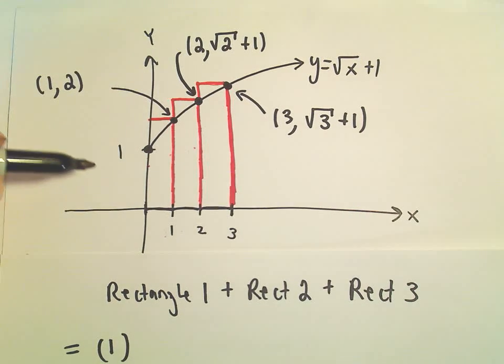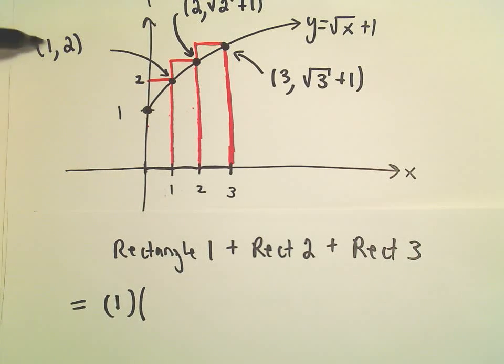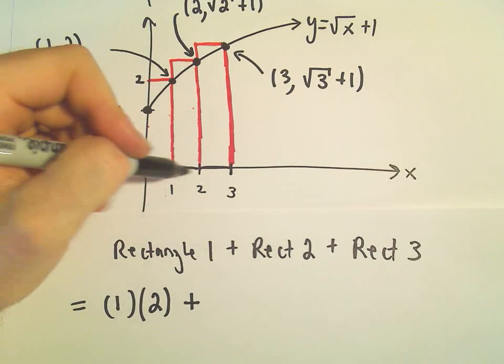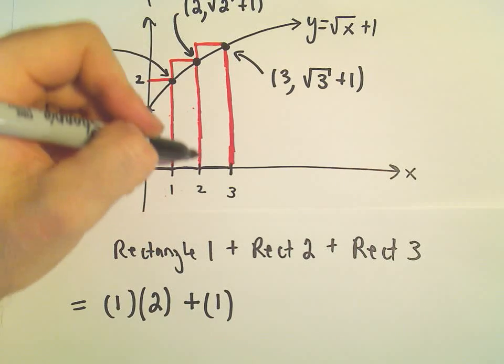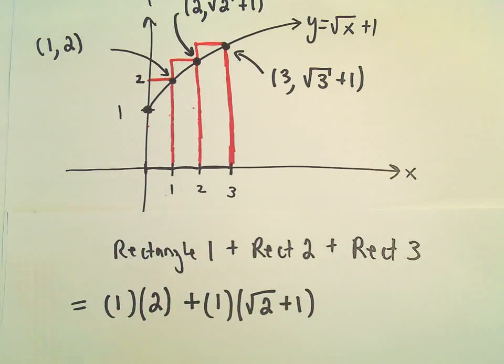The first rectangle has a width of 1 and a height of 2, plus the second rectangle has a width of 1, and its y value is going to be square root of 2 plus 1.